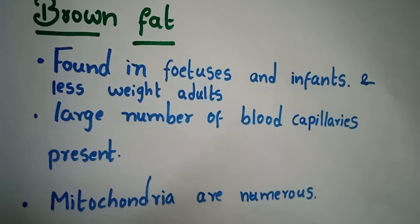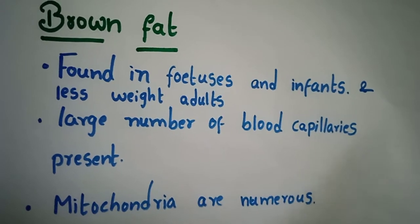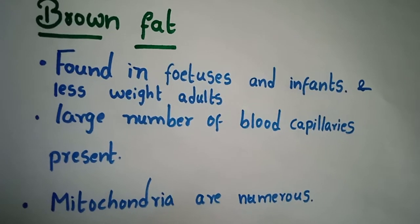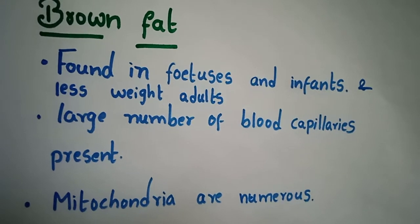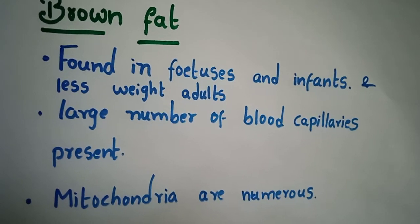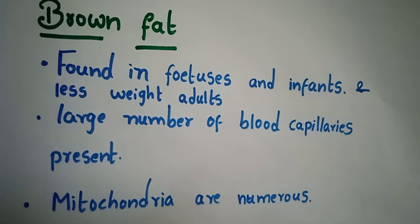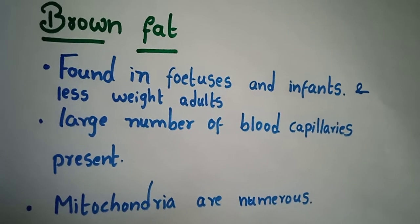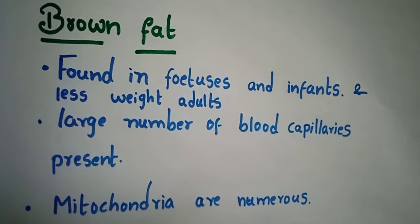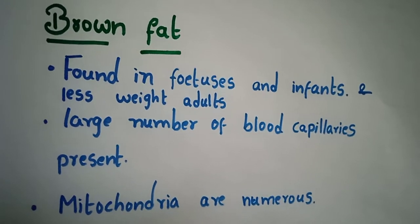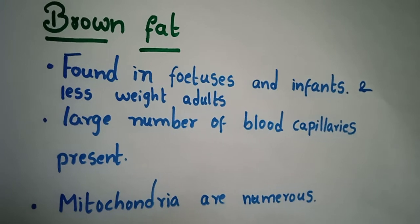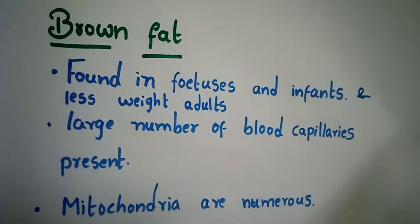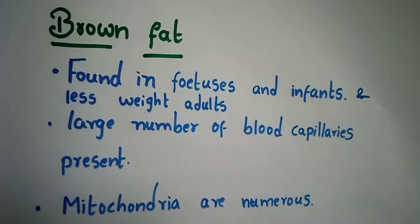Brown fat is mostly found in infants and small mammals, and also in less-weight adults — that means adults who contain less weight in their body. Why? Because this brown fat gives more heat; it can produce more heat.